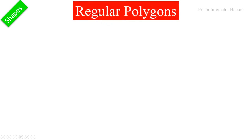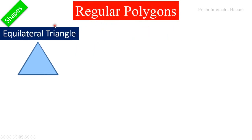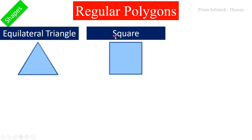Next, let us move on to regular polygons. First one is an equilateral triangle — in this triangle, all three sides are equal. Next one is a square — in this shape, all sides are equal.